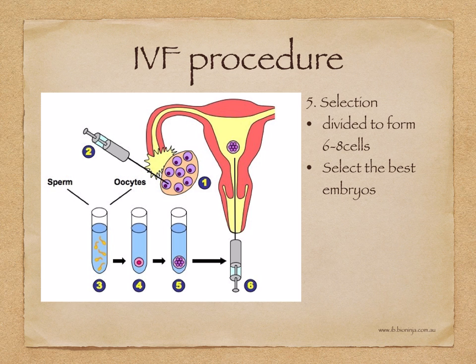Step 5 is selection. After three days, the dishes are inspected to find out which oocytes have been fertilized. These can be identified because they would have divided to form a group of six to eight cells. The best embryos are then selected.